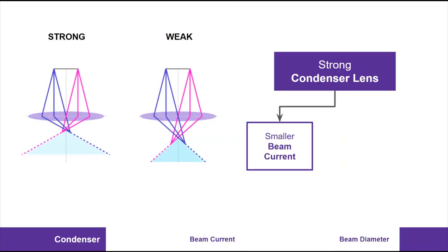The next component we will discuss is the condenser lens. This isn't a piece of glass, like a lens in an optical microscope, but a magnetic lens, a coil, that has current running through it to deflect the electron beam. Otherwise, the behavior of the lens is quite similar to that of optical lenses.